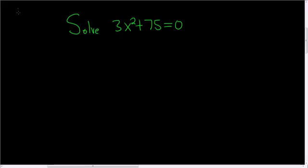Solve 3x² + 75 = 0. Solution. We'll first solve for x².